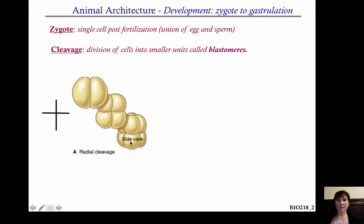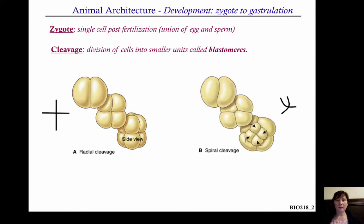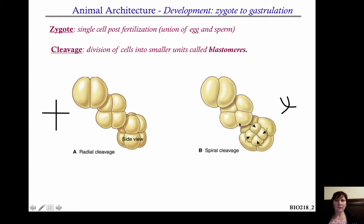This is in contrast to what you get with spiral cleavage. As you can see here, the cells — even at the two-cell stage — are almost a little bit twisted, and you can see that further in the four-cell stage.